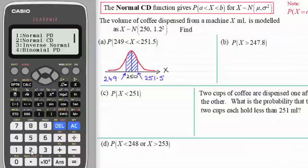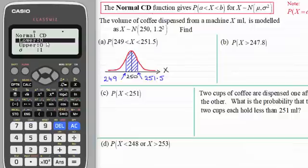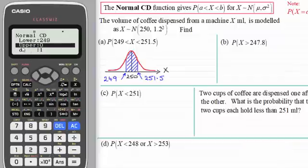So by pressing 2 here, it takes us into this menu where first of all it's asking us for the lower bound, and the lower bound in this question is the 249. So just put 249 in, press equals to enter it, and now this takes us to the upper bound which is 251.5. So we'll put 251.5 in.